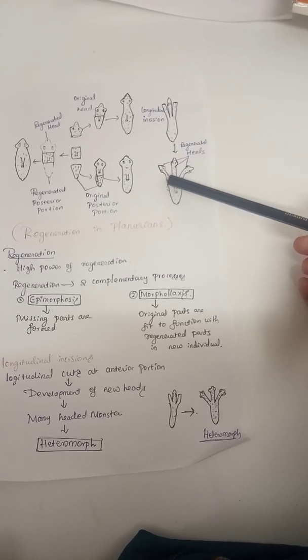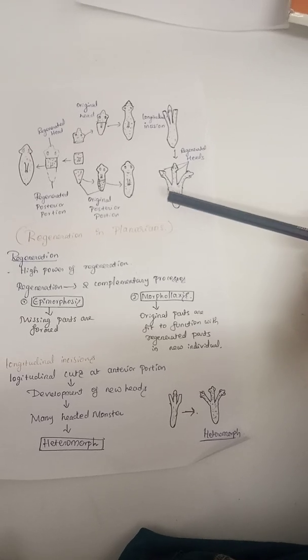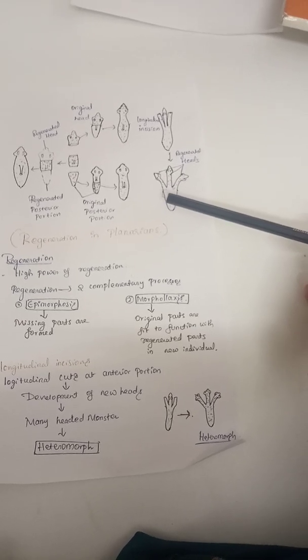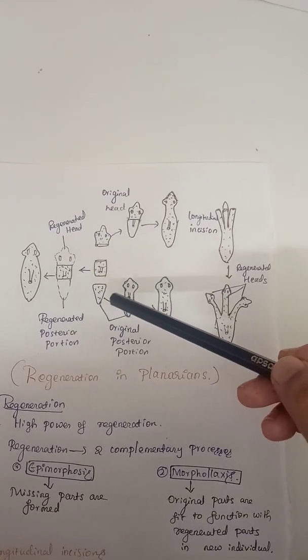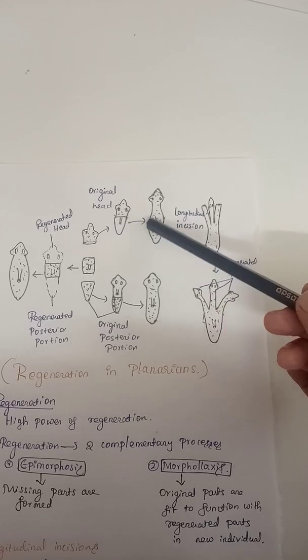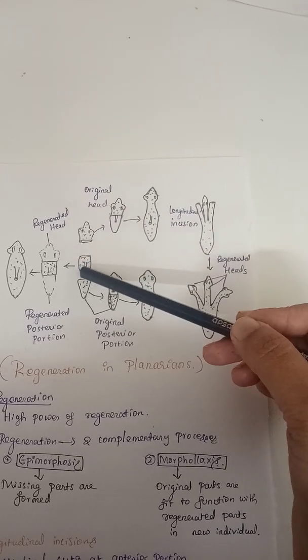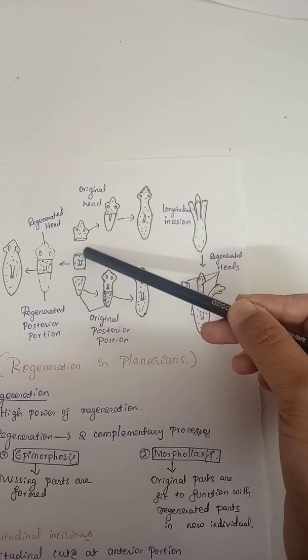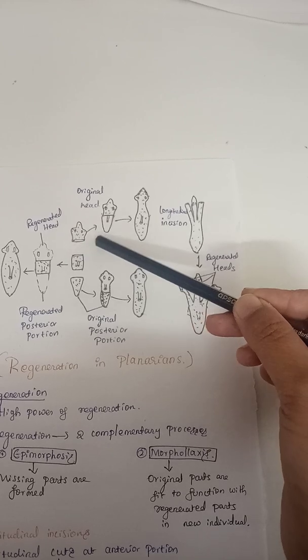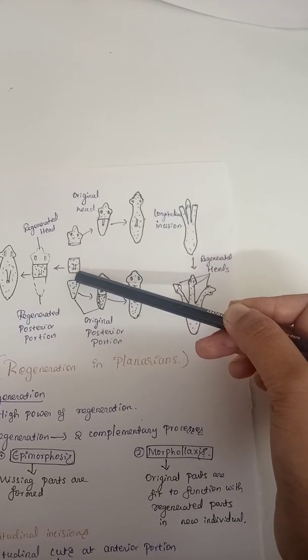It will form a monster-like structure which is known as heteroma. If you cut planaria into two pieces like this, the two individuals give new individuals with regenerated parts, and the middle place also grows into a new individual. The anterior region gives rise to the head and the posterior region gives rise to the tail region.